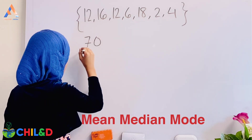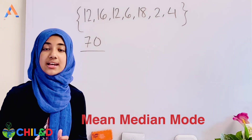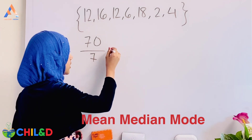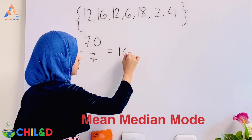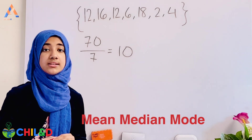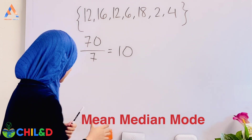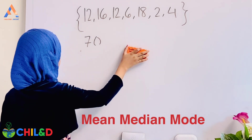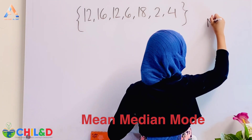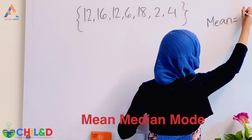There are 7 numbers total, so we divide the sum by 7. The result equals 10. So 10 is our arithmetic average — that is the mean.